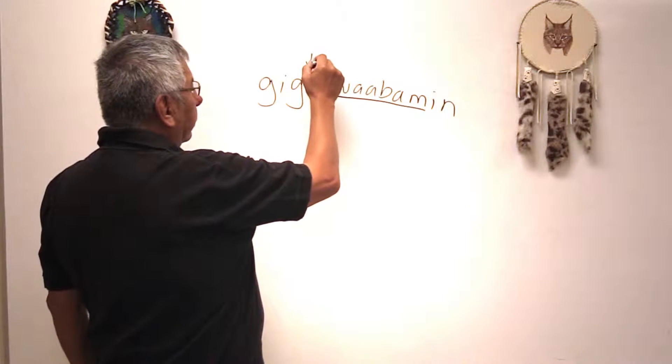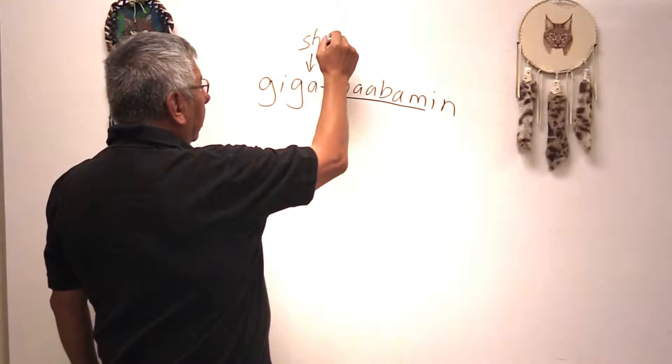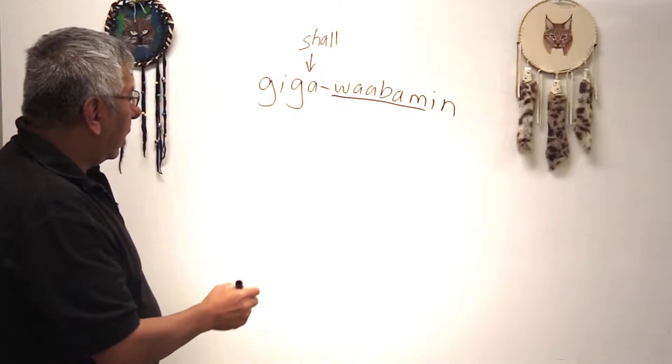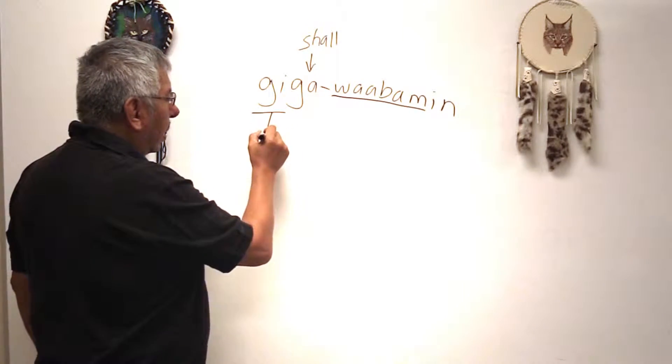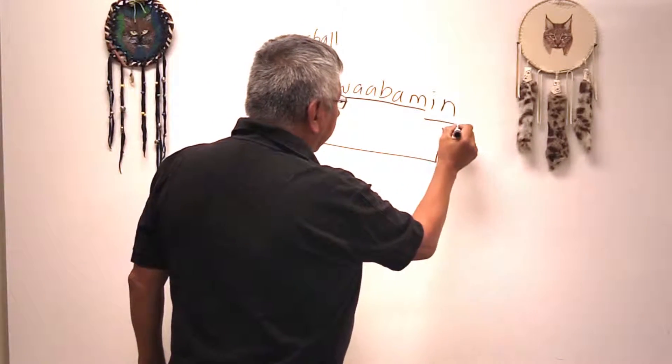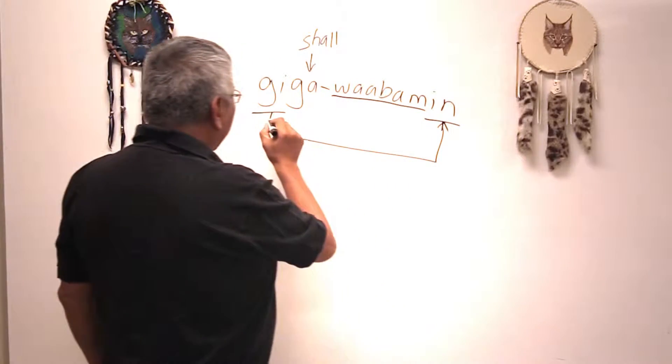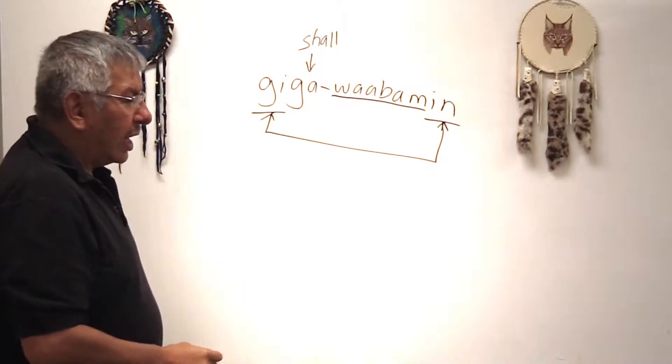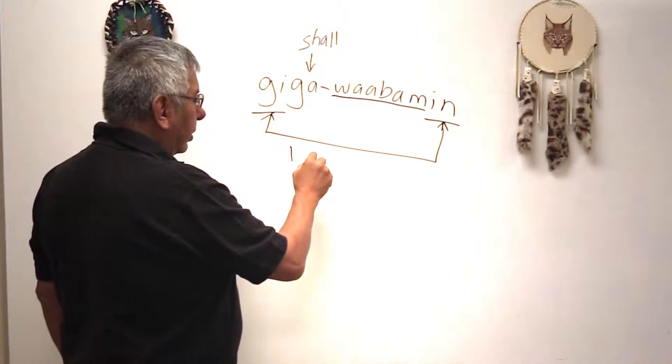The rest of it is shall, and then the GI and the IN combined makes it I to you.